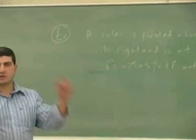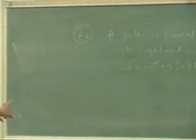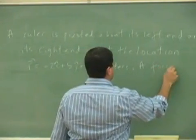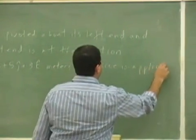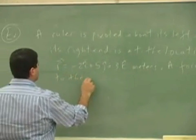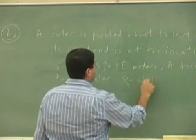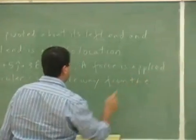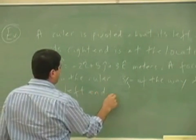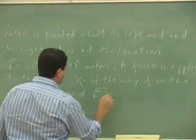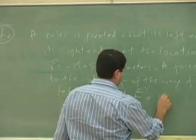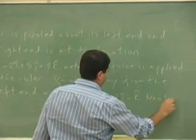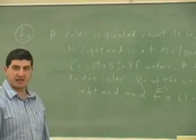The ends of the ruler is at the origin, and the other end of the ruler is at negative 2 plus 5 plus 3. Then we're going to say a force is applied to the ruler three-fifths of the way from the left end, and the force is equal to 6i-hat minus 2j-hat minus k-hat newtons.